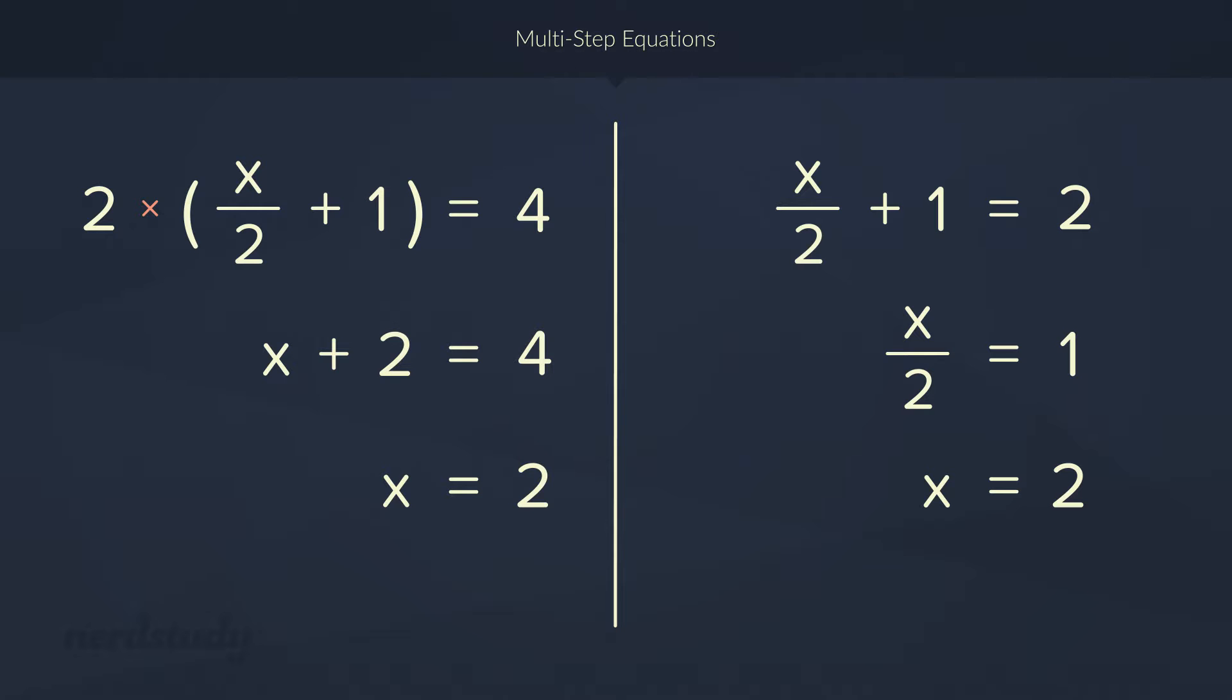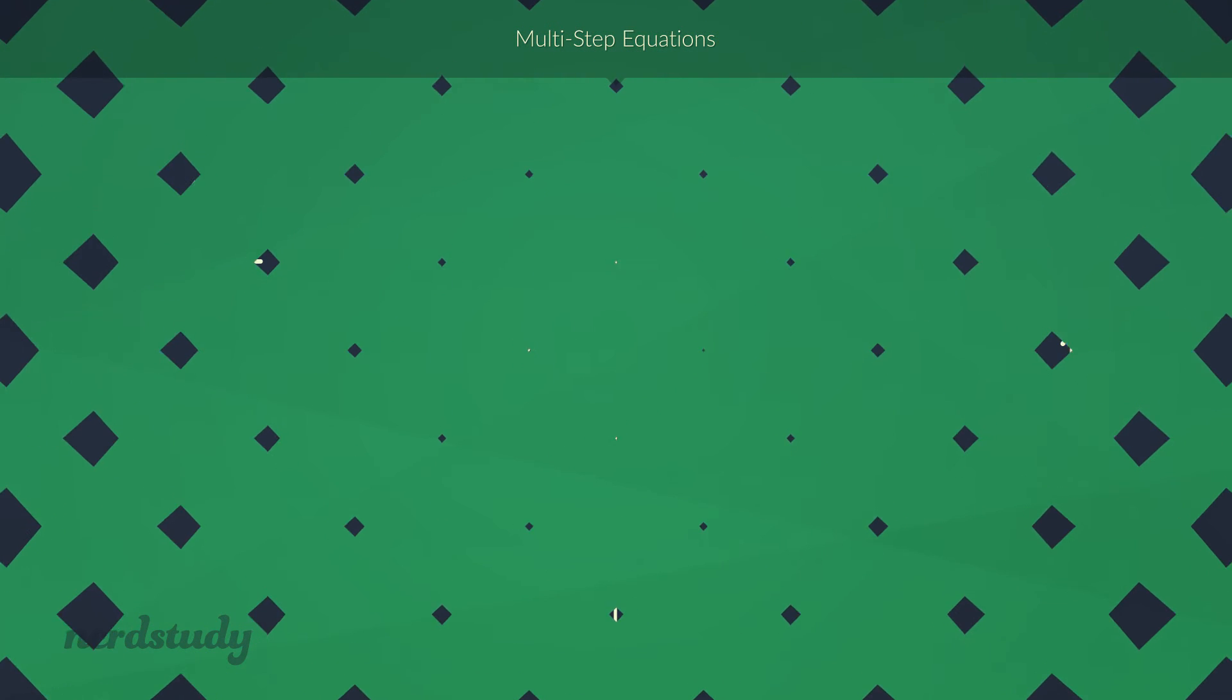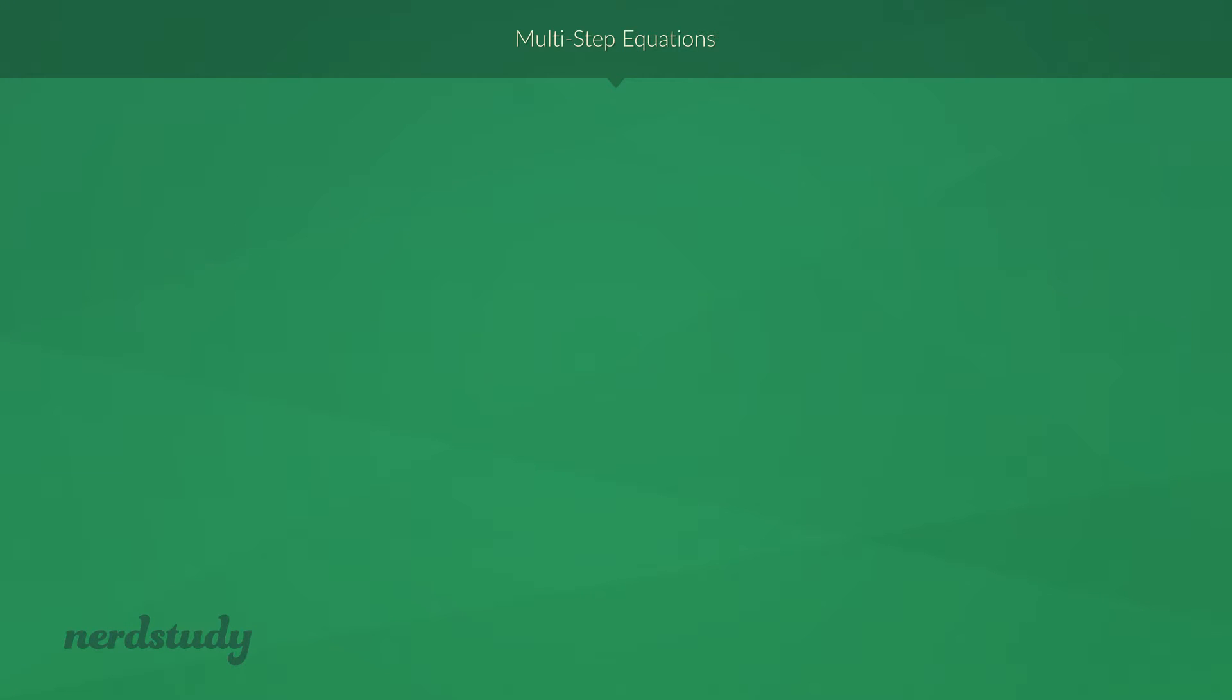Cool. So, let's try another example. This one's going to be a little bit more complicated. Okay. First, let's find out what the BEDMAS order would be. Then, let's reverse it and then deal with each operation at a time.